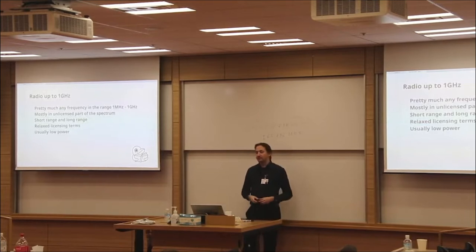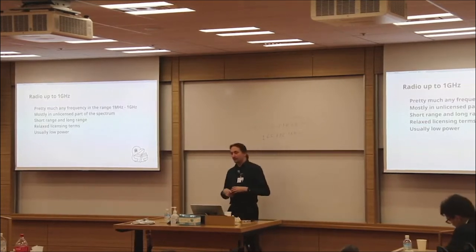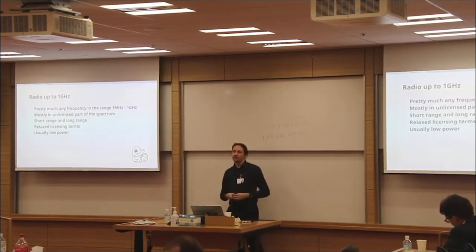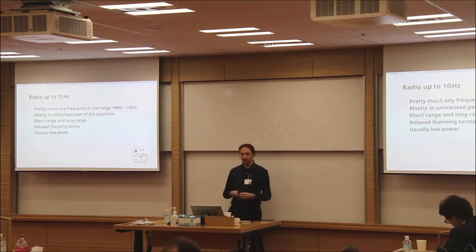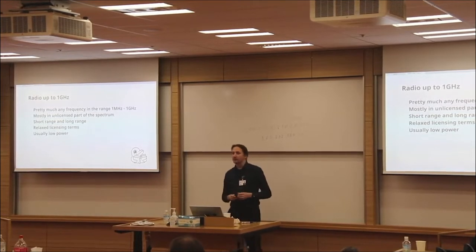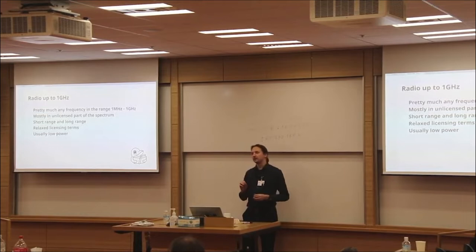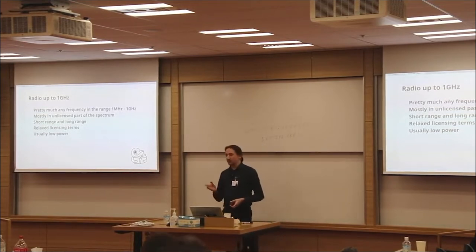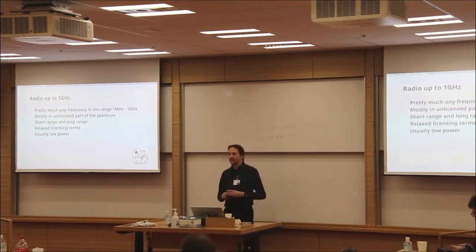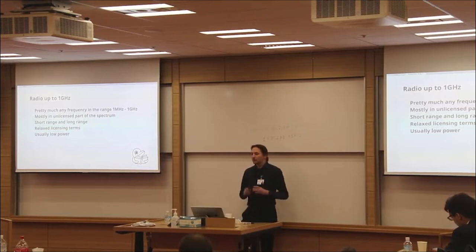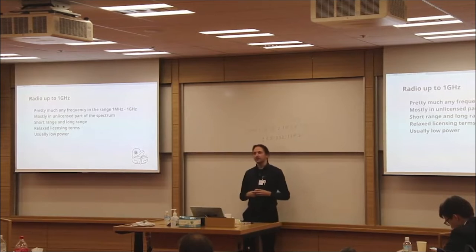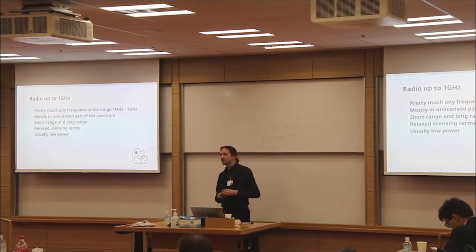We will start with radio up to 1 Gigahertz. For us, it means that when analyzing those systems, we should search for a signal in a wide range of frequencies. Some signals may be quite difficult to find — maybe they have really limited power and you will need specialized tools like directional antennas, amplifiers, and maybe a good spectrum analyzer. Most of those signals can be found in some very specific ranges — we call them amateur ranges, amateur bands. Those bands basically don't require you to have a license to operate in them.